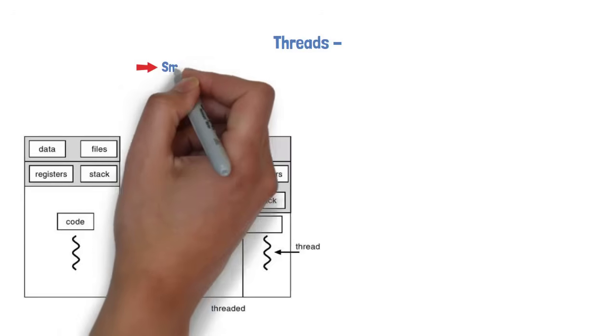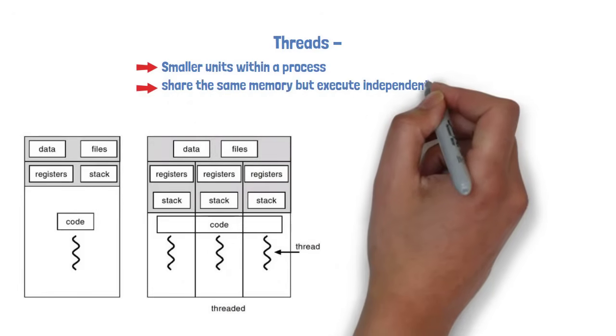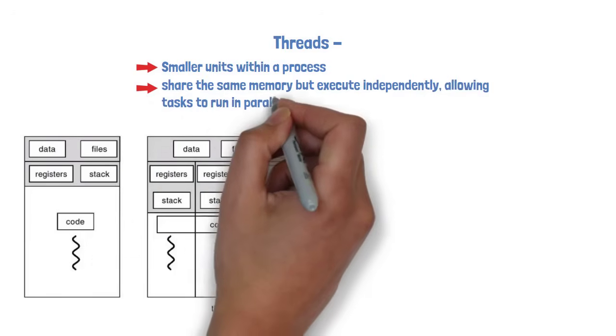Threads are smaller units within a process. They share the same memory but execute independently, allowing tasks to run in parallel within one program.